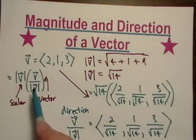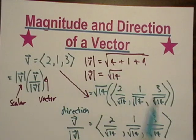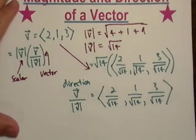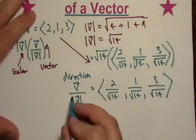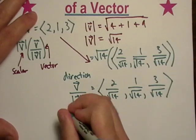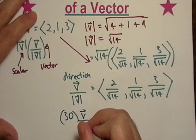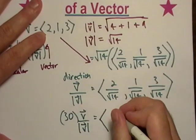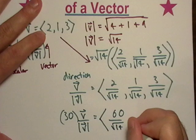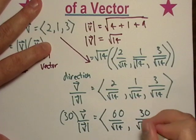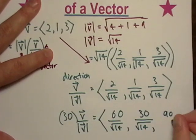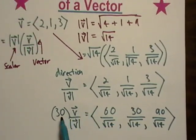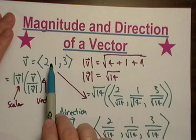So what we want to do now is we can pick this vector apart. Say I wanted to go 30 miles an hour in the direction of this vector — all I have to do is multiply 30 by this unit direction vector and I get a new vector. This new vector is the result of traveling 30 miles an hour in the direction of that original vector.